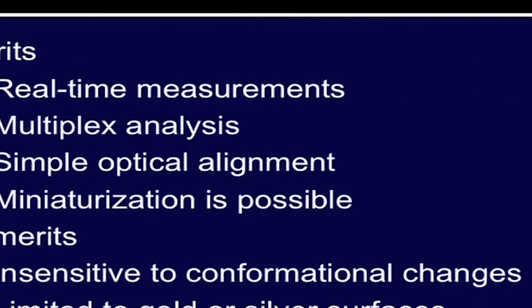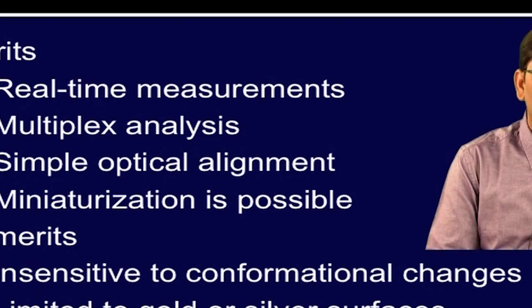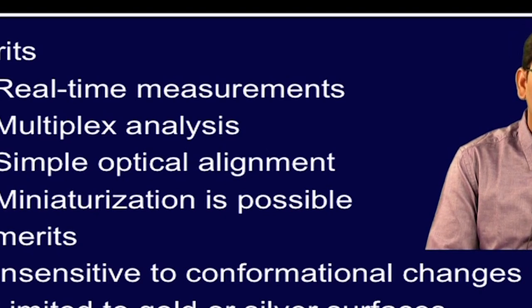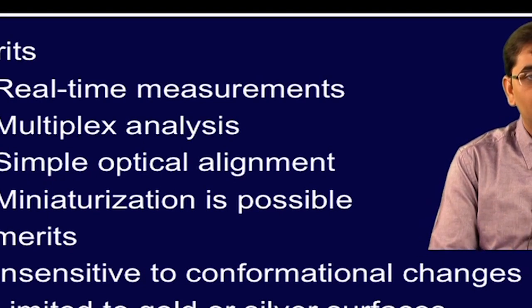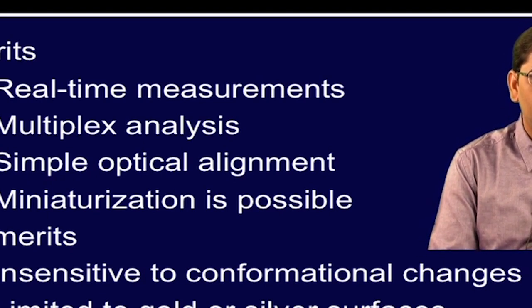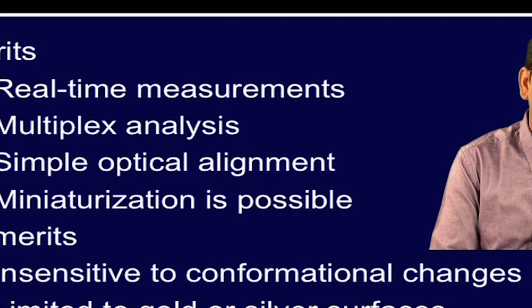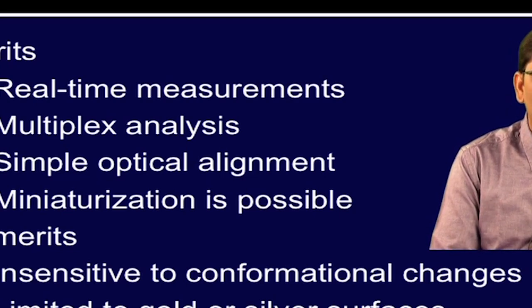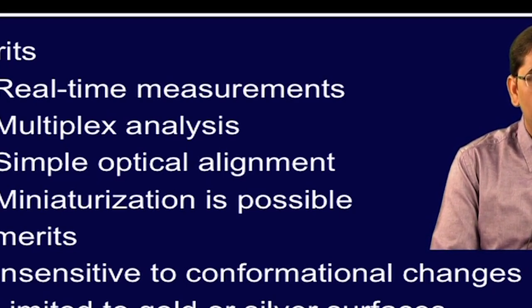There are many advantages of using nanohole arrays. They provide information in real time with multiplexing capability. The optical alignment is very simple, and miniaturization is very much possible using this type of platform. One can get rid of the bulky prisms which is the case in traditional SPR instruments, which is not required in this case here. Furthermore, the sensitivity is much higher in nanohole arrays in comparison to traditional SPR.